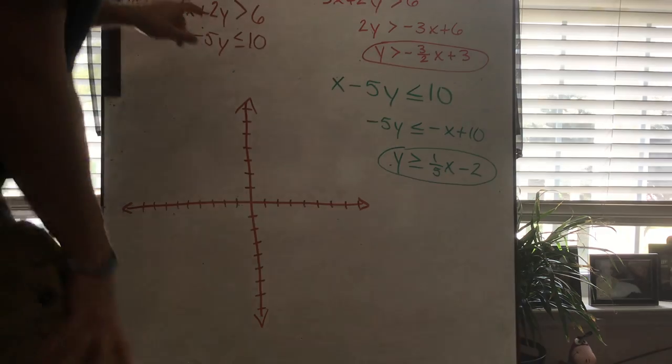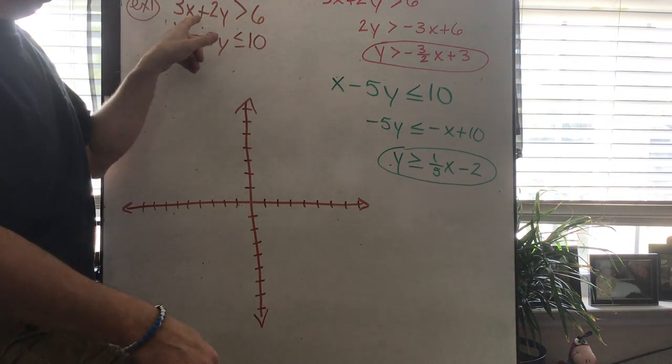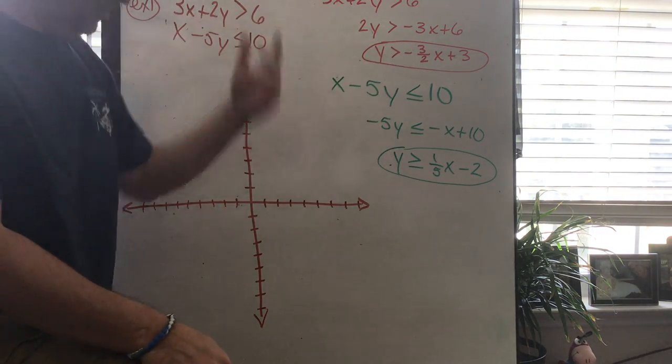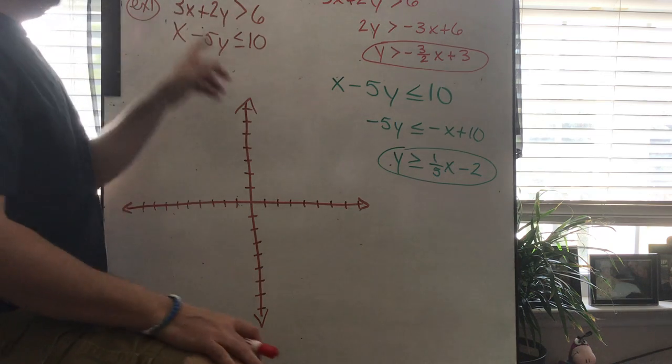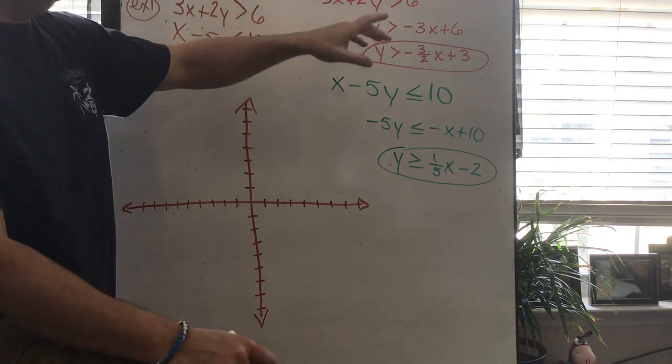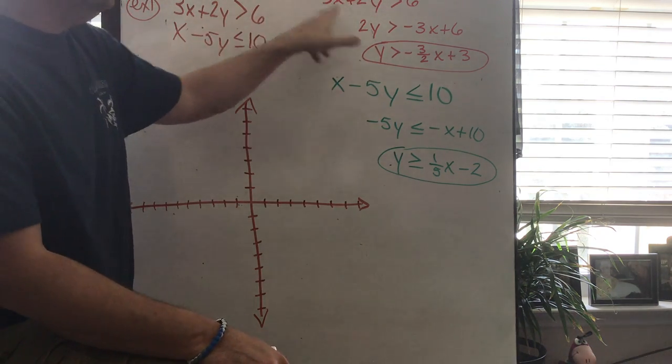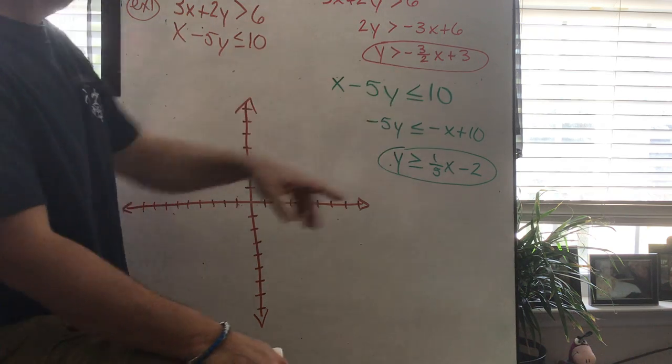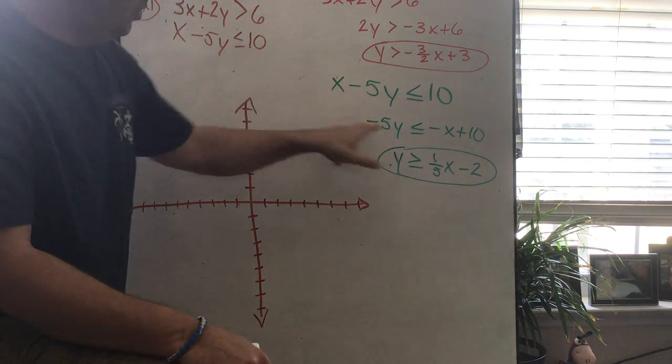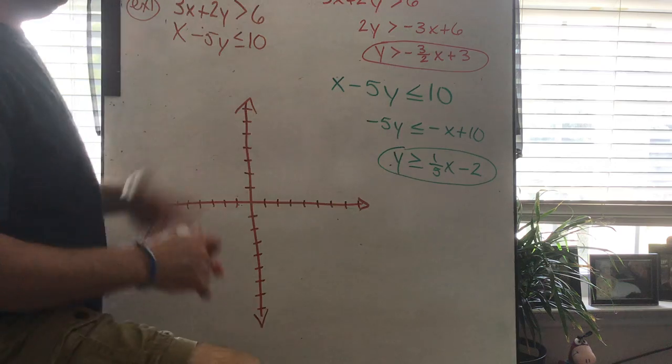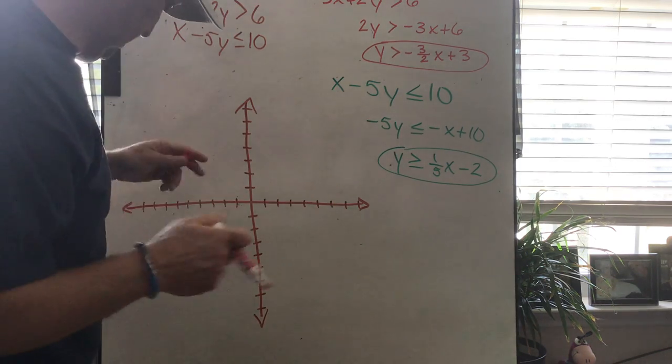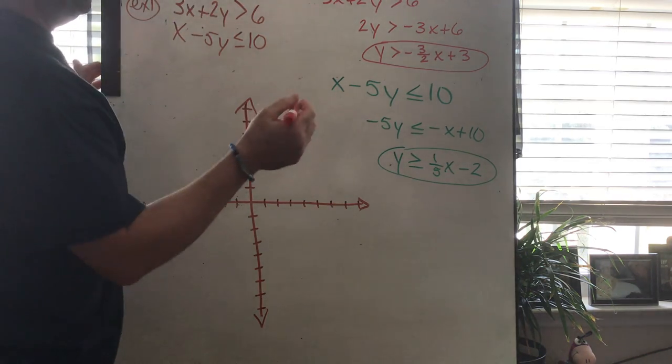So here's what I've got for you so far with this example. First thing we're gonna have to do sometimes is we're gonna have to get our inequalities in the slope-intercept form so they're easier to graph. So I've done that for you already, because I don't feel like we need to go over that. We should already know how to do that. Subtract 3x divide by 2. My second one, subtract x and divide by negative 5. And now we're ready to graph them.